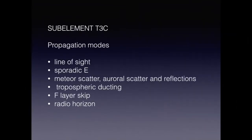In this lesson, we're going to talk about propagation modes, which are line of sight, sporadic E, meteor scatter, aurora scatter, reflections, tropospheric ducting, F-layer skip, and radio horizon.